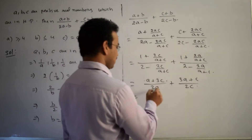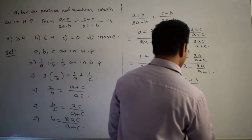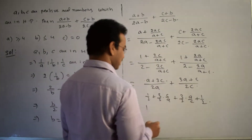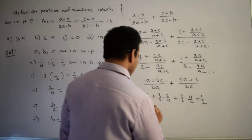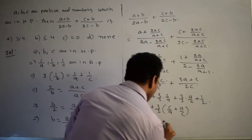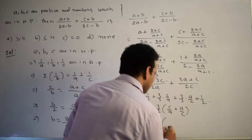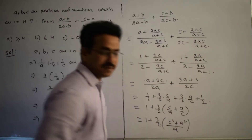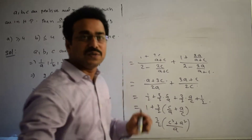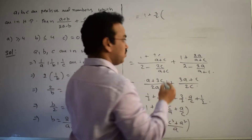We can split the expression: (A + 3C)/(2A) + (3A + C)/(2C). This gives 1/2 + 3C/(2A) + 3A/(2C) + 1/2, which equals 1 + (3/2)(C/A + A/C). When facing these types of questions, try to write a whole square form. So let me write C² + A² all over AC.